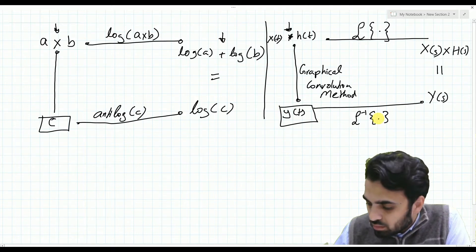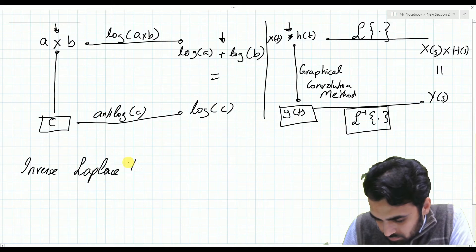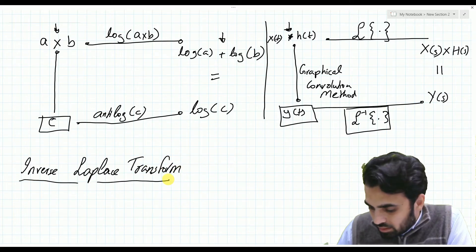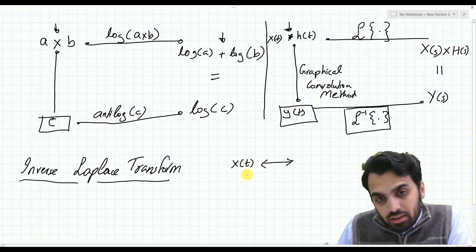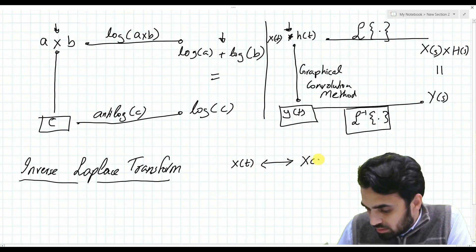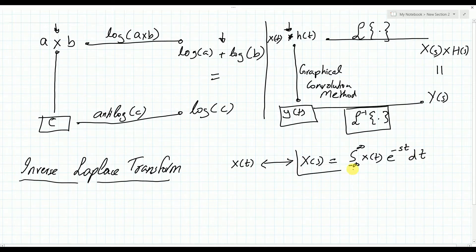Our present discussion deals with the inverse Laplace transform. If x(t) is a signal in the time domain, we can take the Laplace transform X(s) by integrating from minus infinity to infinity the signal x(t) multiplied by a complex exponential e^(−st) dt. This is our Laplace transform.